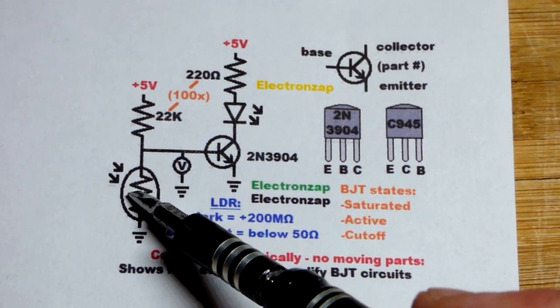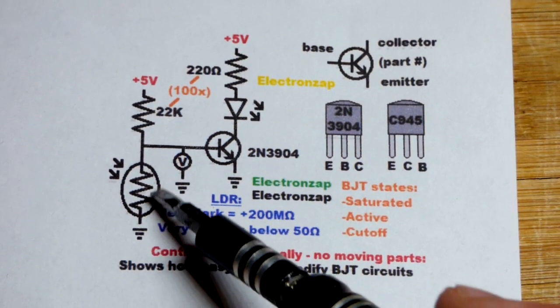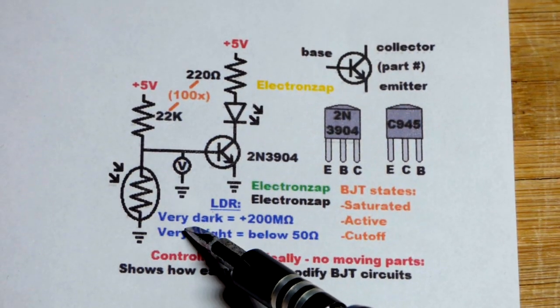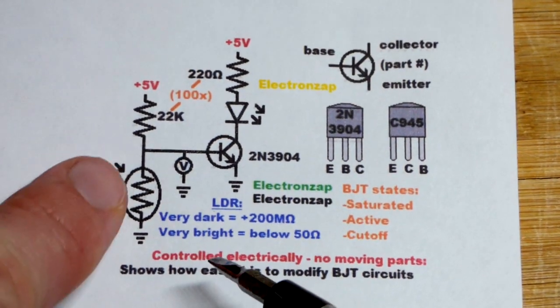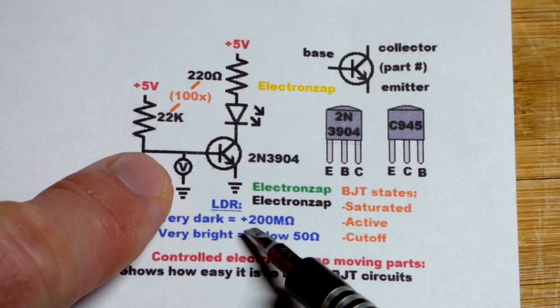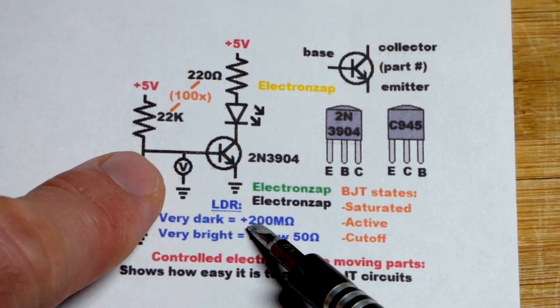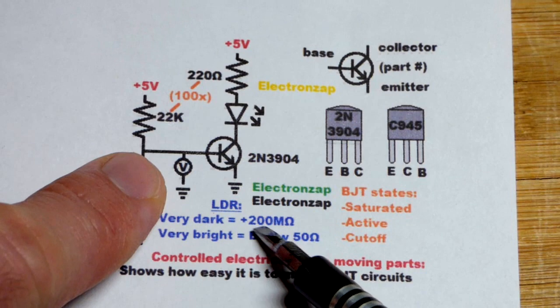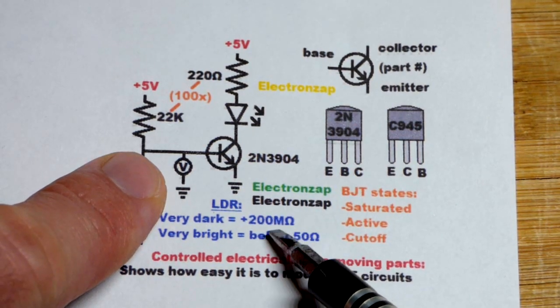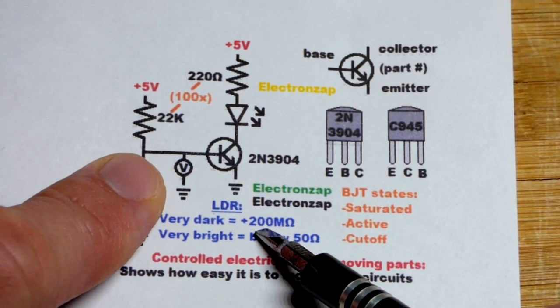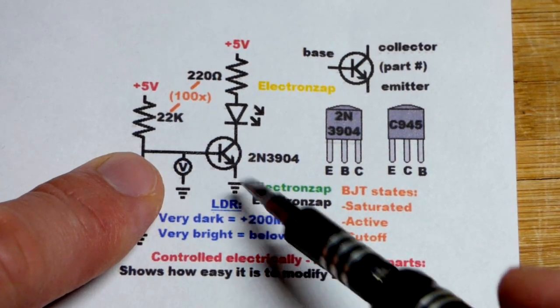Now, if we get it dark enough, let's go best-case scenario. We completely cover it. Cover it completely. No light falls in on it at all. According to my LCR meter, which has a limit of 200 million ohms of resistance, mega-ohms, that's the limit of the LCR meter. It goes above that.